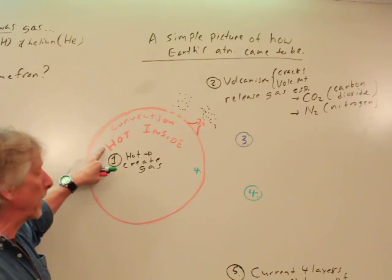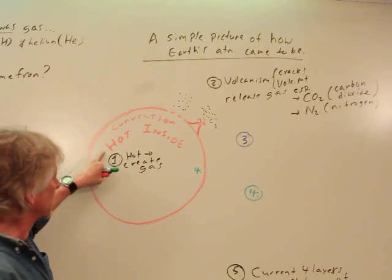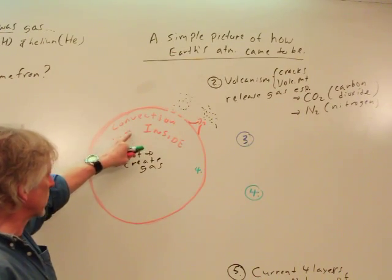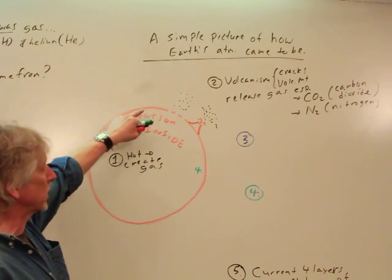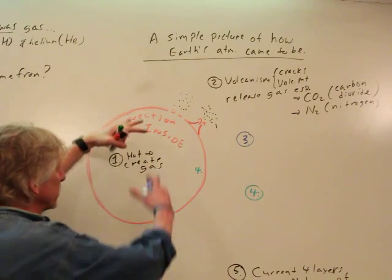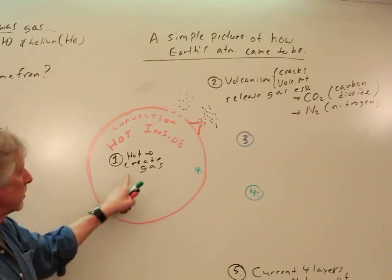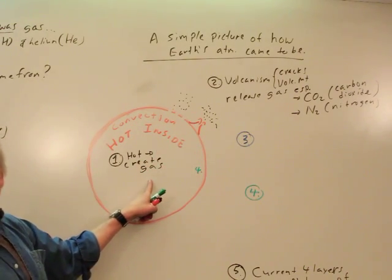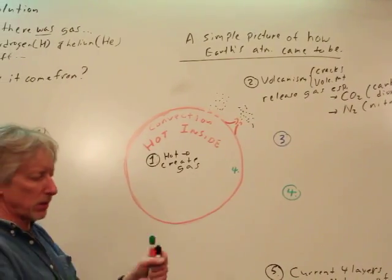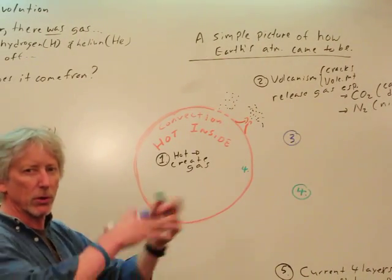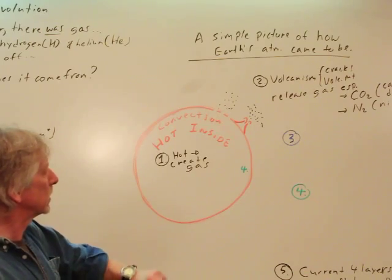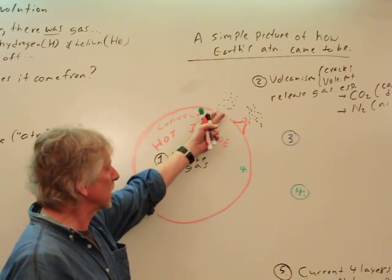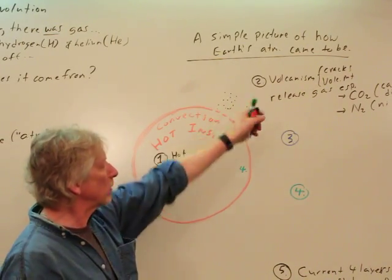So, we said it's hot inside. And it's hot inside that creates convection on the mantle, hot stuff rising, cooling, sinking, moving around the surface. And hot creates gas, just heat up some water, you'll get some steam. It makes the molecules jiggle faster, break apart, and they become a gas. And the gas gets released through volcanism.